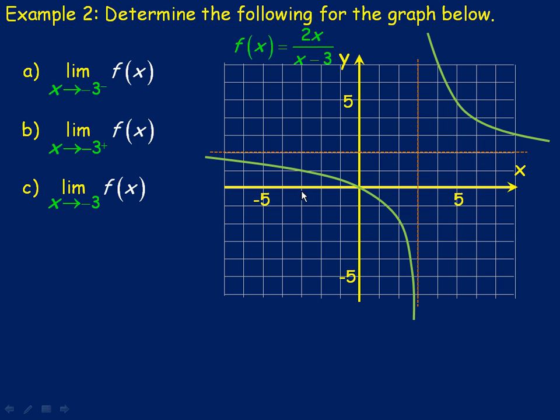So we're approaching negative 3 from the left side. So that's where negative 3 is right there. Actually, let's just write that in the graph. So there's where negative 3 is. And so we're approaching, remember, this means from the left side. That means it's negative 3, but that means it's from the left. So we're approaching negative 3 from the left.